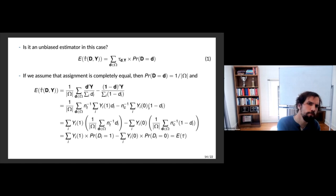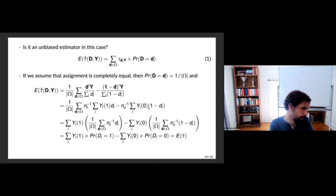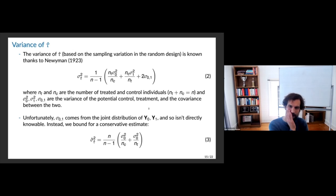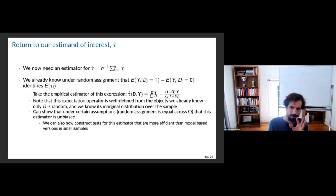There are three properties we'd typically be interested in for an estimator: is it unbiased, is it consistent, and what are the properties of inference — how efficient is it? This estimator is unbiased. The key point is that it's unbiased crucially under random assignment being equal over the omega space.